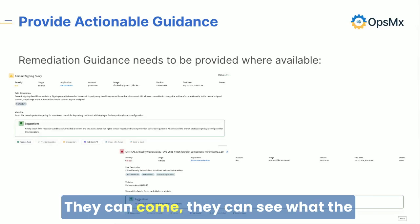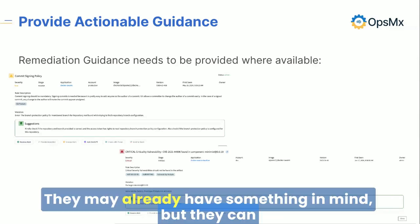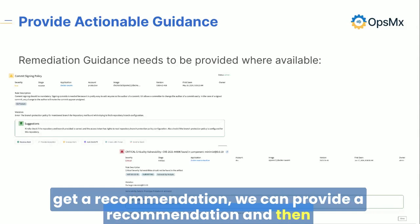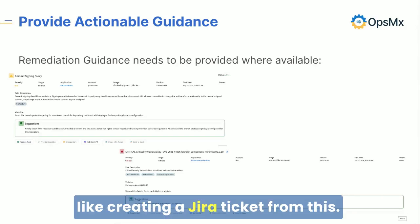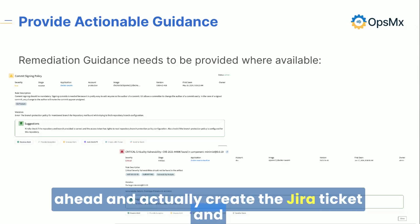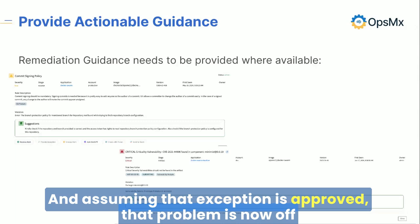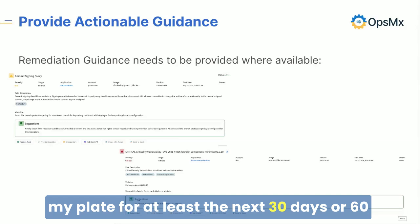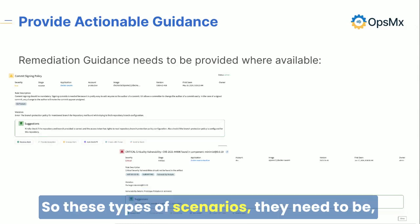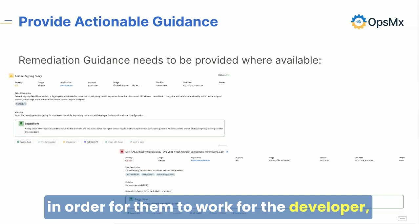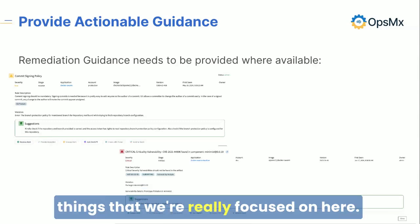They can come in, see what the situation is, and get a recommendation. We can provide a recommendation, and then they can go down the path of creating a JIRA ticket, applying for an exception, and assuming that exception is approved, that problem is off their plate for the next 30 or 60 days because a security person is reviewing it. These types of scenarios need to deliver value without additional overhead, and that's one of the things we're really focused on here.